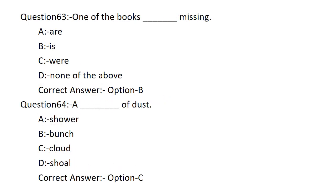One of the books dash missing. Option A: ARE. Option B: IS. Option C: WHERE. Option D: INCREASE. The correct answer is Option B — IS. One of the books IS missing.